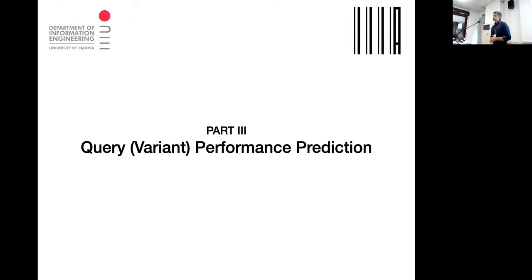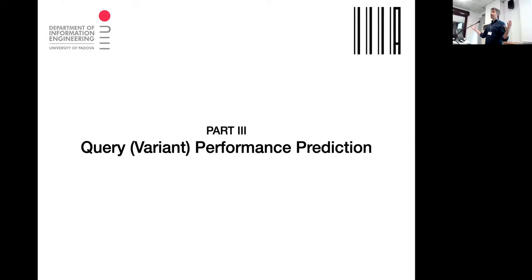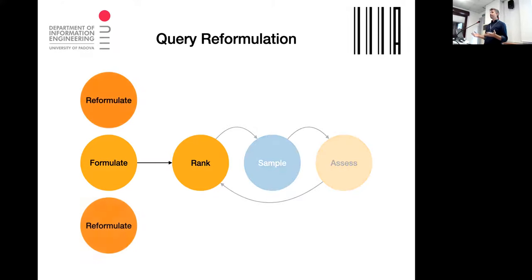The third part is about a different approach. Suppose you have an information need and come up with 10 query variants. Is there a way to say which of these 10 variants is better than the others before you start collecting documents? If so, starting in a favorable situation — with more relevant documents early on — means you can use that information much earlier. So it's about trying different query reformulations and having different rankings.